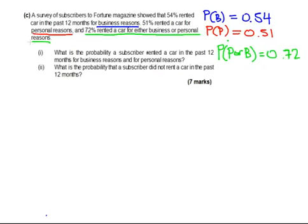What is the probability that a subscriber rented a car in the past 12 months for business reasons and for personal reasons? Just let's be clear, it's for both. There was for both reasons that the subscriber rented the car, not one or the other, strictly for both. So what we are asked for here is the probability of P and B.